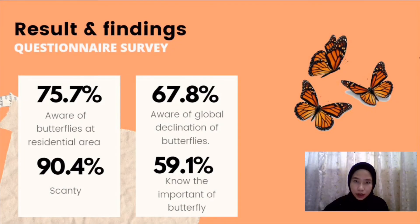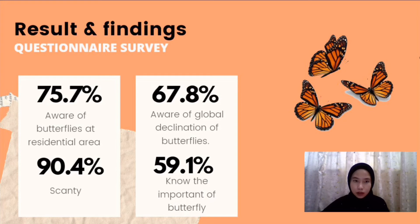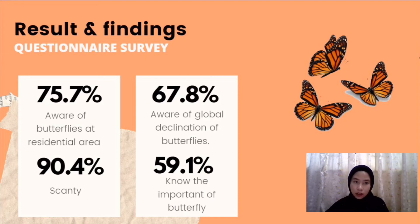For the questionnaire results, about 75.7% of respondents are aware of butterflies in their residential area. However, 90.4% reported a decrease in the number of butterflies they have seen. 67.8% of respondents are aware of the global decline of butterflies, but only 59.1% know the importance of butterflies to our ecosystem.